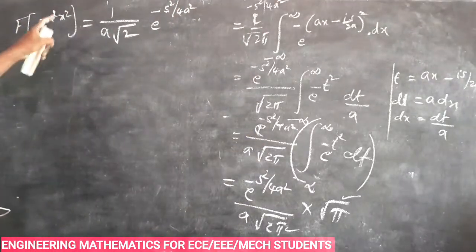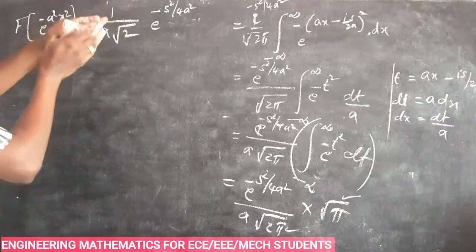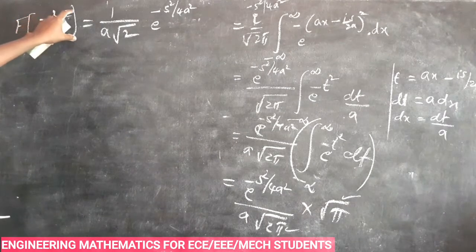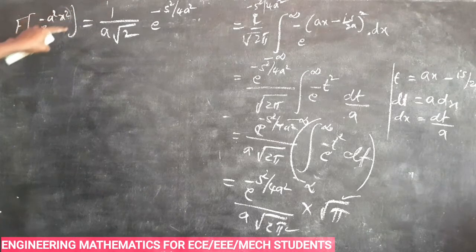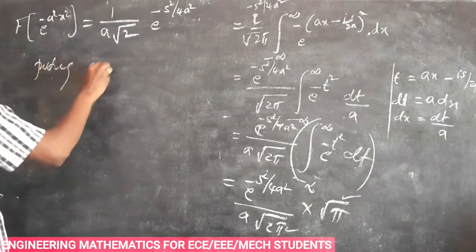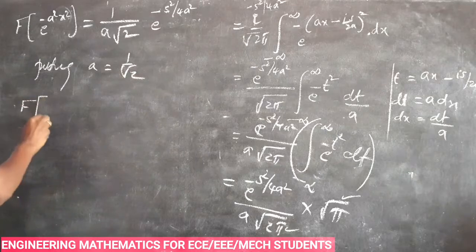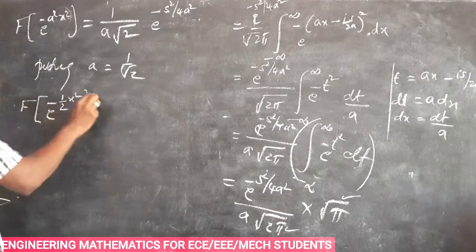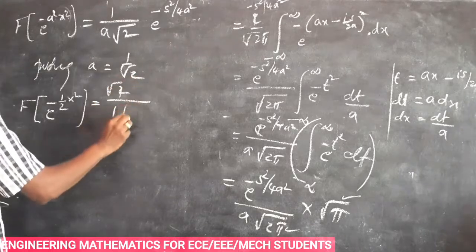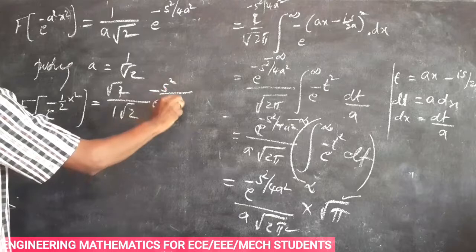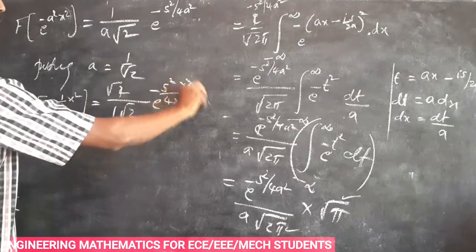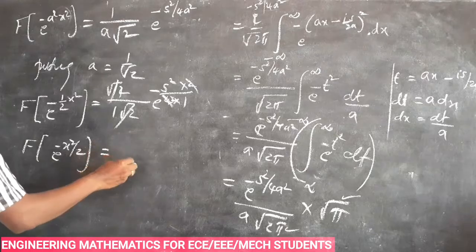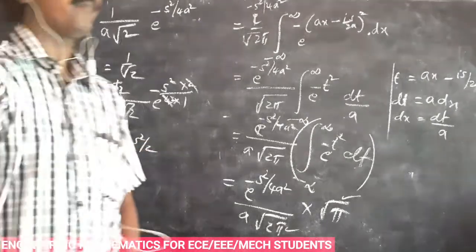Now to prove e power minus x squared by 2 is self-reciprocal, we find the Fourier transform of e power minus a squared x squared where a equals 1 by root 2. Substituting a squared equals 1 by 2, we get s squared by 4 a squared equals s squared by 2. The 2 and 1 cancel, so Fourier transform of e power minus x squared by 2 is equal to e power minus s squared by 2.